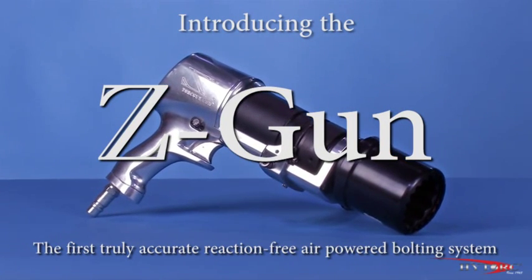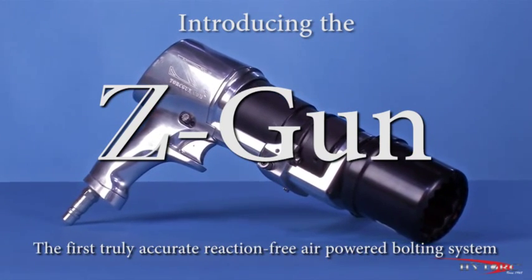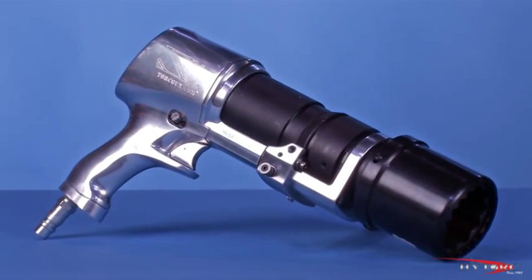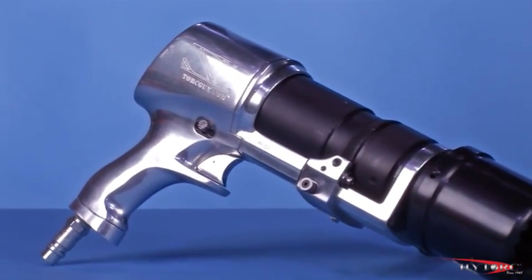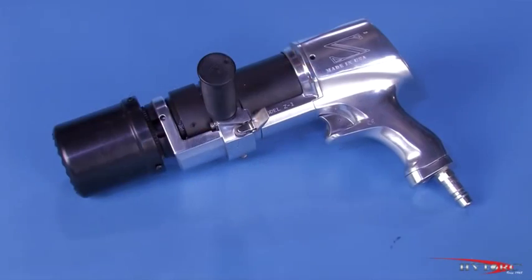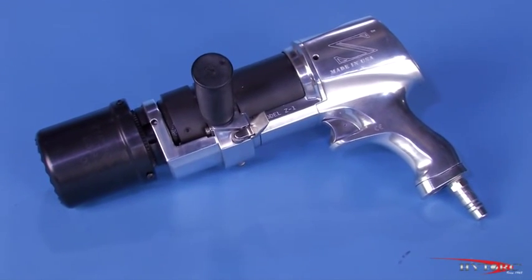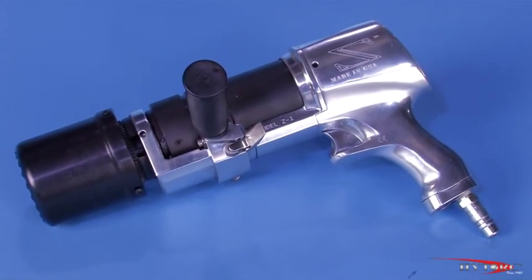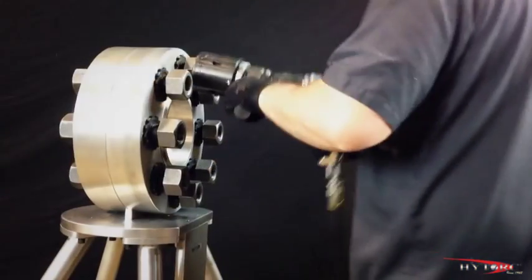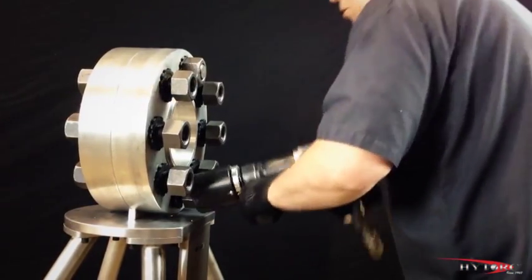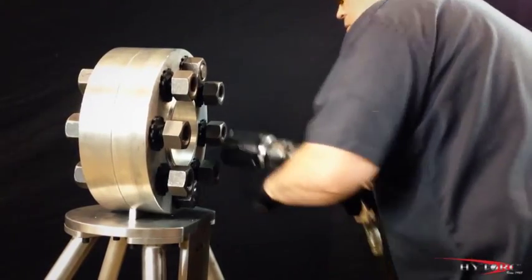This is the amazing high-torque Z-Gun, the first truly accurate reaction-free air-powered bolting system. The ingenious Z-Gun actually incorporates an impact wrench and a powerful precision torque multiplier in the same tool, combining lightning-fast rundown with calibrated torque and raw power.